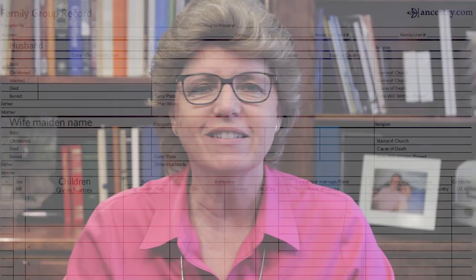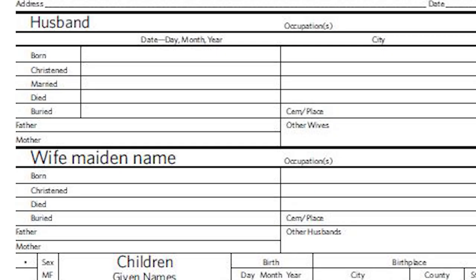The family group sheet is not a tree at all, but a detailed sheet showing the father, the mother, and all of their children. Additionally, this group sheet shows birth, marriage, and death information with dates and places. You'll see similar layouts in various genealogy software and online programs, and you'll want this information for each of your family groups.